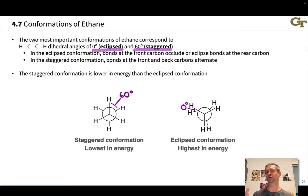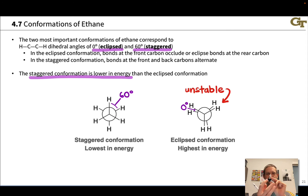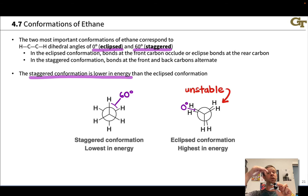The staggered conformation as an energy minimum is naturally lower in energy than the eclipsed conformation. The eclipsed conformation is terribly unstable, because any rotation around the bond is going to move the C-H bonds farther apart and alleviate the steric interactions that exist in the zero-degree perfectly eclipsing conformation. So this is an energy maximum — we can think of it as a transition state in the process of rotation from one staggered conformation to another.